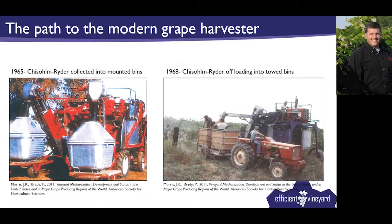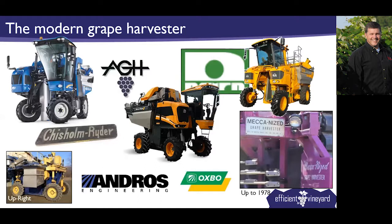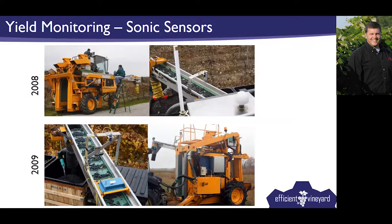Chisholm-Ryder came up with the self-propelled unit using shaker rods throughout the canopy, and there are all sorts of variations in collection systems leading to today's harvesters. Most harvesters today use a shaker head — bow rods or a trunk shaker — that shakes fruit onto a conveyor belt, which carries it across the row into a gondola, bin, or side-discharge bin on the harvester. That leads us to where we can measure yield coming off the harvester.